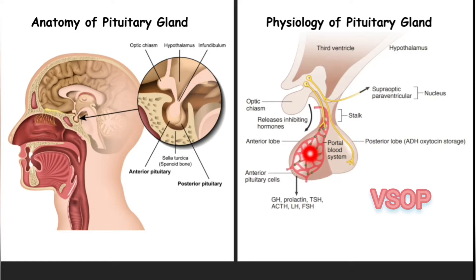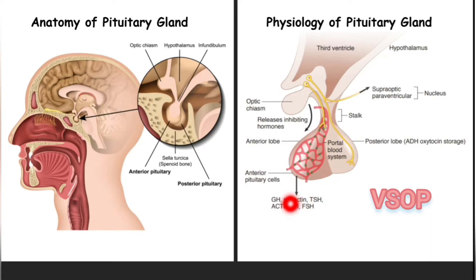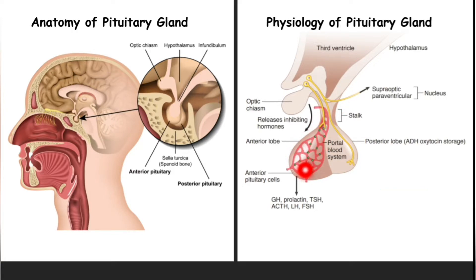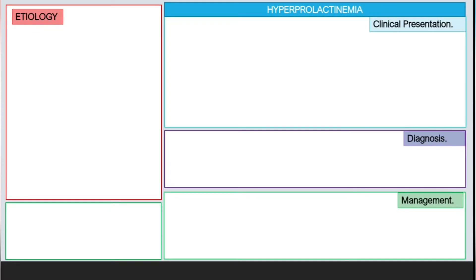The anterior pituitary is instructed by cells in the hypothalamus. The hypothalamus has releasing hormones and inhibitory hormones. Releasing hormones stimulate the anterior pituitary cells to produce hormones. When those hormone levels are high, feedback mechanisms stimulate the hypothalamus to produce inhibitory hormones, which then inhibit further hormone production. Now let's talk about hyperprolactinemia.